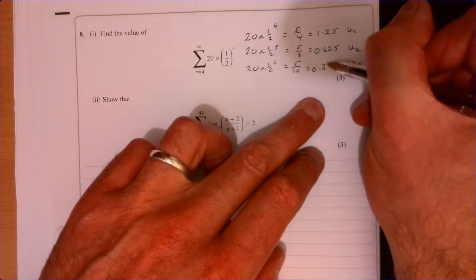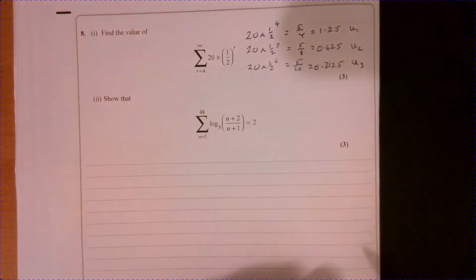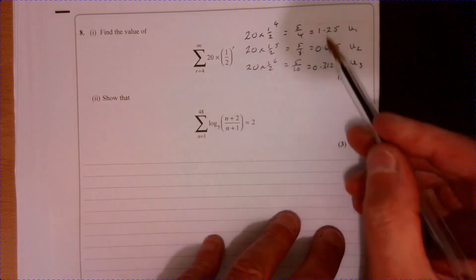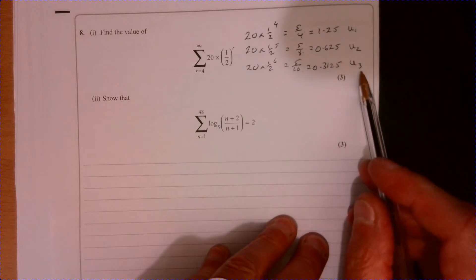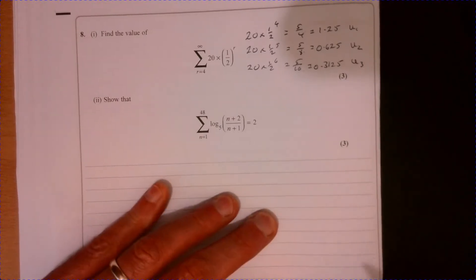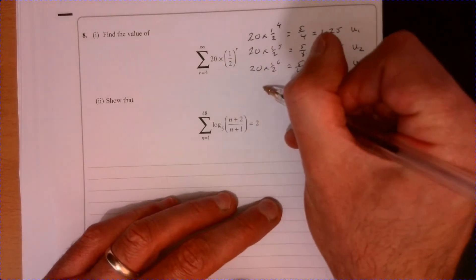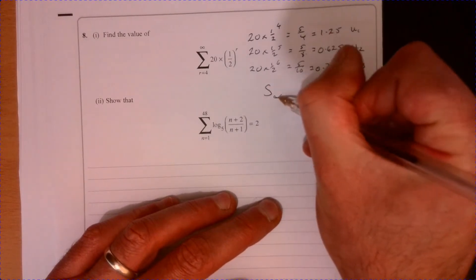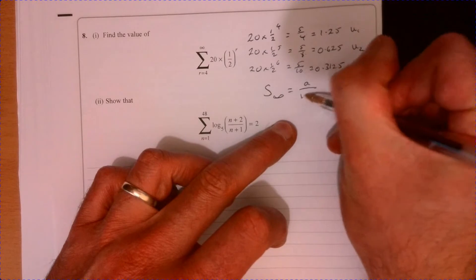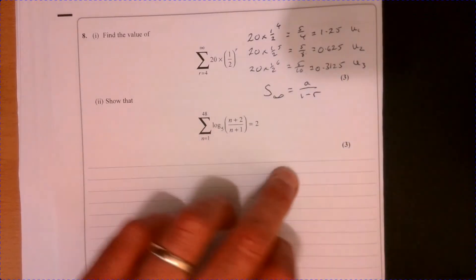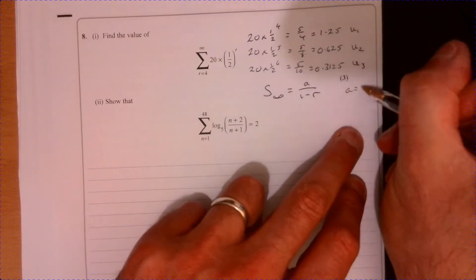So we've got a geometric series and it's going to converge. That should tell you, you can look in your formula book, and it should tell you that you can use this formula here, where a is the first term.